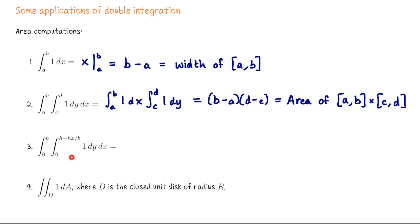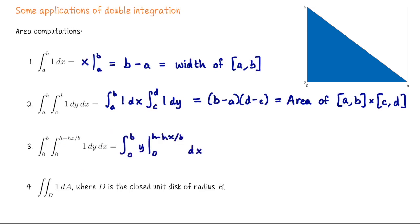Take a second to look at these bounds of integration and try to sketch a picture. For this integral I'm going to anti-differentiate 1 with respect to y. Plug in the top bound and we're left with the integral from 0 to b of h minus h over b times x dx. We anti-differentiate that with respect to x and get hx minus h over 2b times x squared. Plug in the top bound of b and overall that's b times h divided by 2. If you sketch this region correctly, you should have sketched a triangle with base b and height h. Integrating 1 over that triangle gave us the area of the triangle.